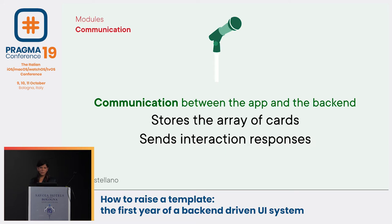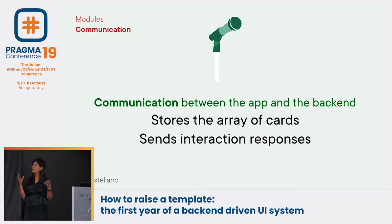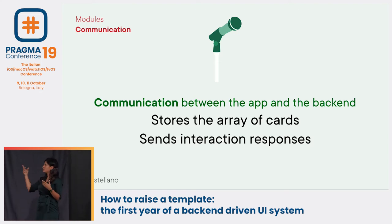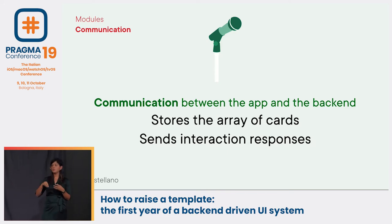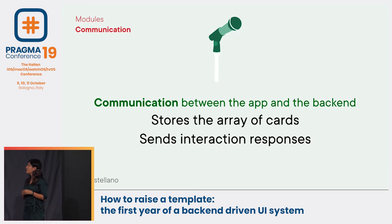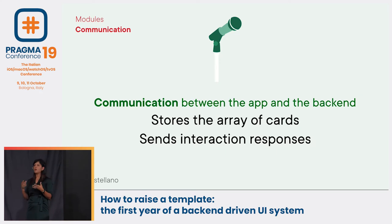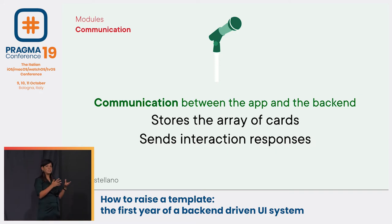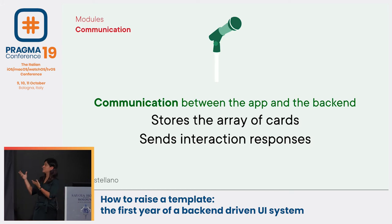The Communication module is the connection between the app and the back-end. It constantly listens for new information from the back-end, extracts the information, and stores it on the device to be parsed later into views. It also sends back user interactions — did the user click the card, interact with it, or dismiss it? Once that interaction is sent to the back-end, the back-end can recalculate and find out if there's something more relevant to show.